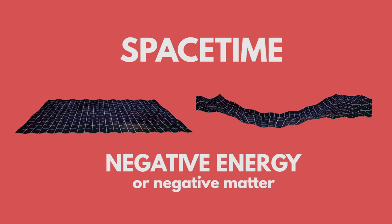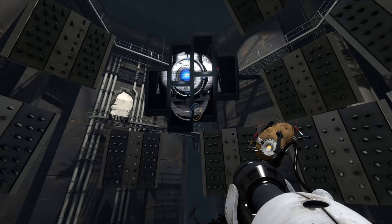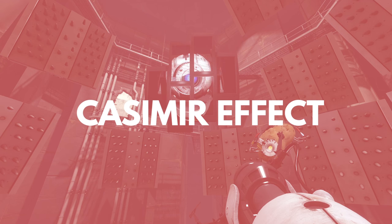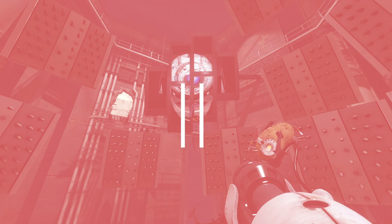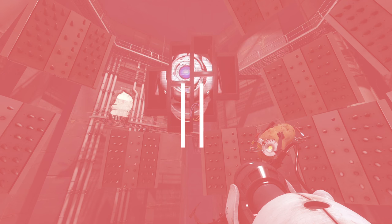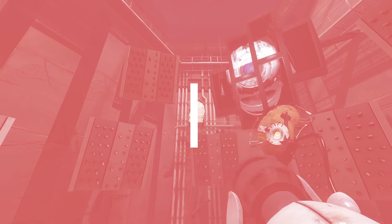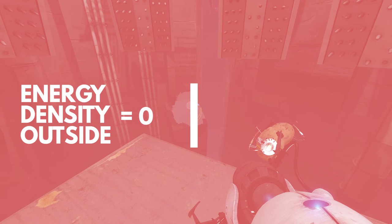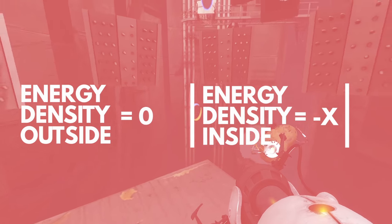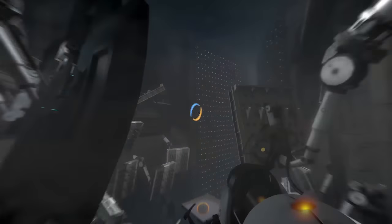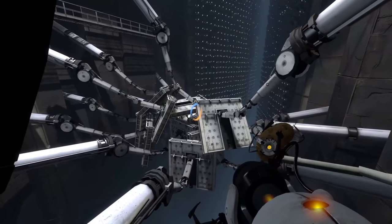We call this negative energy or negative matter, not to be confused with antimatter. Negative energy sounds bonkers, but it explains some strange phenomena like the Casimir effect. The Casimir effect is what happens when two plates are placed nanometers apart in a vacuum — they become attracted to each other because the energy density between the plates is less than on the outside. But the energy density of a vacuum is zero, so the space between the plates must have had a negative energy density. I'll let Wheatley demonstrate a rough approximation of the Casimir effect.